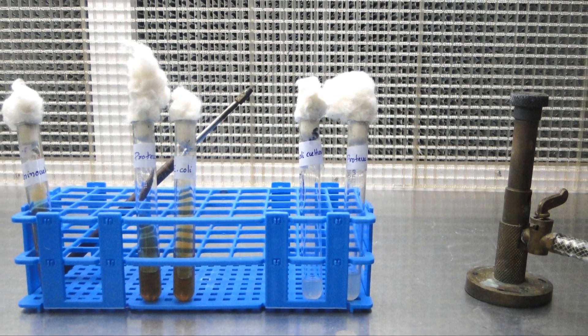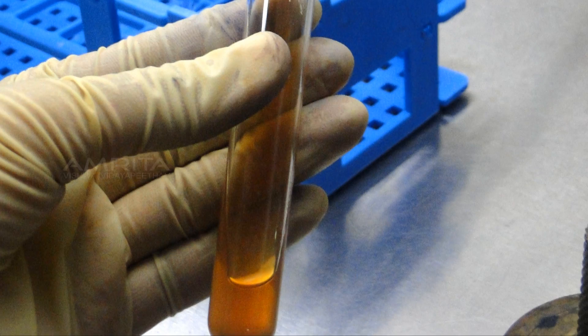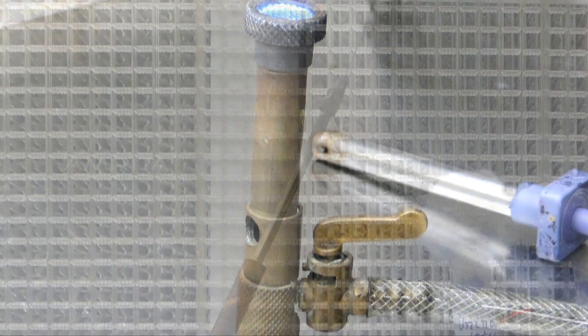Materials required: 24 to 48 hour tryptic soy broth cultures, urease slant, Bunsen burner, inoculating loop, and test tubes.